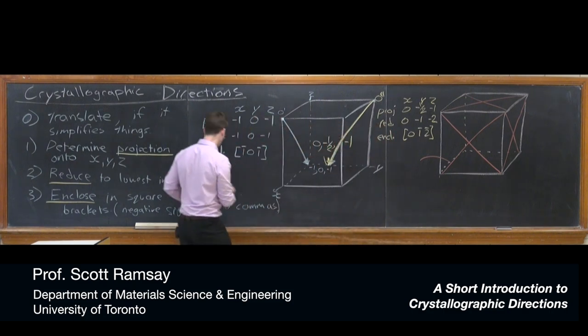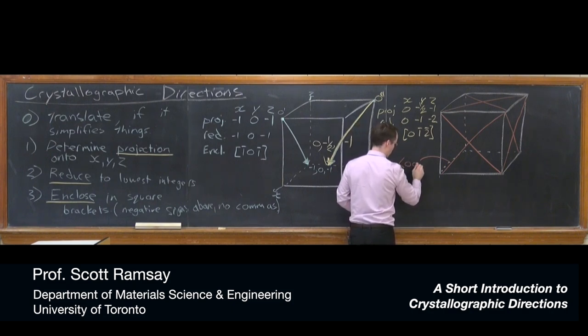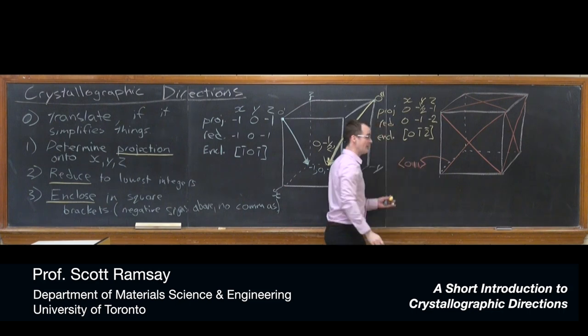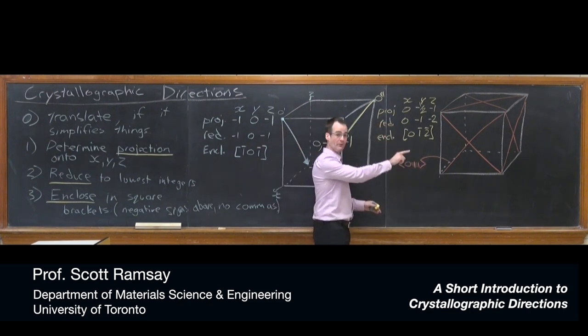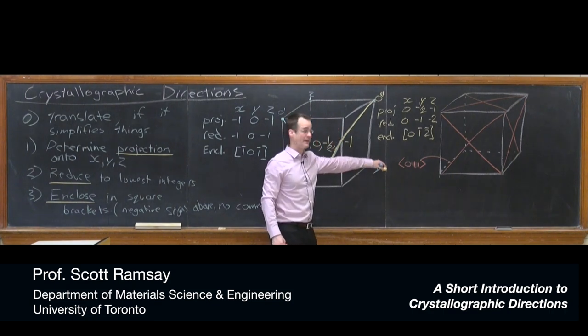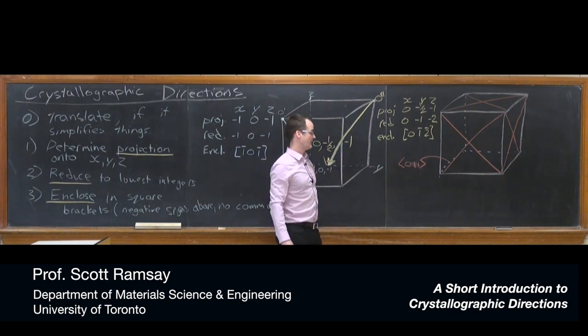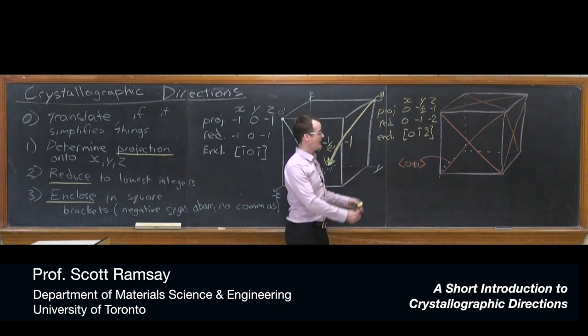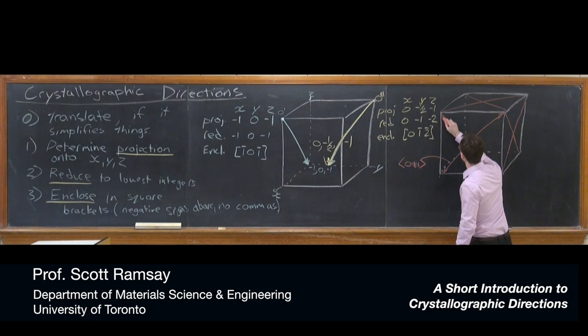And so the way to describe a family of directions is the same process, except we enclose it in angle brackets, 0, 1, 1. And usually we move the 0 out to the left, non-zeros increasing towards the right, and express it in the simplest way. We wouldn't express this as the 0, 1, 1 family of directions. Rather, we just call it the 0, 1 bar 1 or something like that. We just drop the negative signs. And that includes all of those vectors, both positive and negative direction of each, and so on for all the faces.